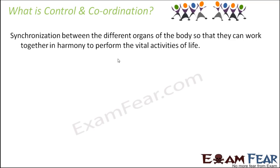As spoken about in the previous lesson, there are two ways in which this synchronization is taken care of in the human body. One is with the help of the nervous tissue — that is the nervous system — where nerves have the special ability to get excited and carry electric impulses from one part of the body to another. There is another way to manage the synchronization, and that is with the help of chemicals, which is what we will talk about in this lesson.